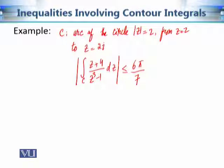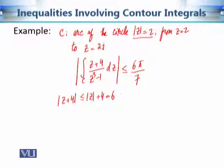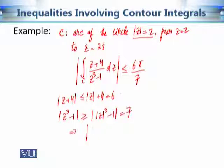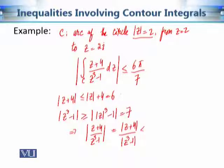The proof involves calculating the upper bound M of this function. Calculating the arc length L is relatively simple in this case. To find M, we use the following facts: the modulus of z + 4 is less than or equal to 6 because |z| = 2 on the contour. Similarly, |z³ − 1| is greater than or equal to 7. This implies that |z + 4| / |z³ − 1| is less than or equal to 6/7. These are hints and the details are left as an exercise.